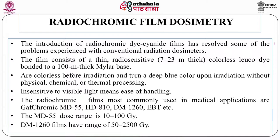A new category of film has emerged that obviates the need for processing: radiochromic film. These films use cyanine dye and have resolved some problems experienced with conventional dosimeters. The film consists of thin, radio-sensitive, colorless leuko-dye bonded on a 100-micron thick mylar base. They are colorless before irradiation and turn a deep blue color upon irradiation, without physical, chemical, or thermal processing. The most commonly used radiochromic films in medical applications are GAFchromic films like models MD-55, EBT-2, and EBT-3.